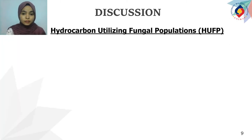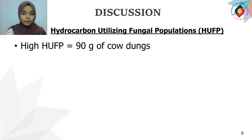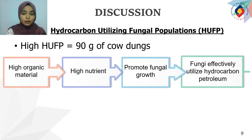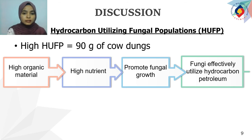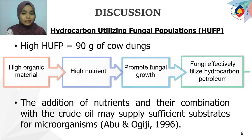In terms of hydrocarbon utilizing fungal population (HUFP), a higher number of HUFP can be obtained by using 90 grams of cow dung. This suggests that higher organic materials can provide higher nutrients to the fungi population, allowing the fungi to effectively utilize hydrocarbon petroleum. Examples of nutrients obtained from the organic materials are nitrogen and phosphorus. According to Abu and Ogiji in 1996, the addition of nutrients and their combination with the crude oil may supply sufficient substrates for microorganisms.